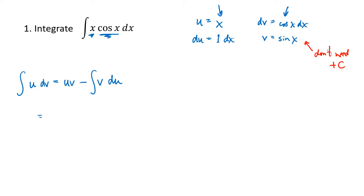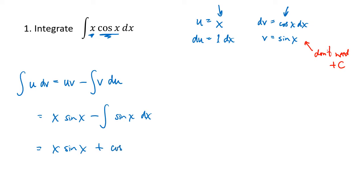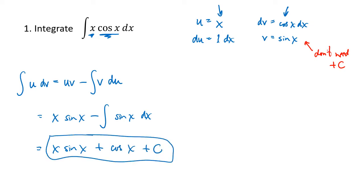So it's u times v: x times sine of x, minus the integral of v du, which is sine of x dx. We've transformed our integral into one that's easier to do. All we have to do is find the antiderivative of sine of x, which is negative cosine of x. Subtracting negative cosine of x gives us plus cosine of x, and so that's our antiderivative.